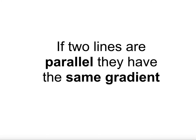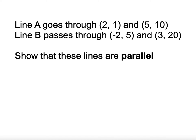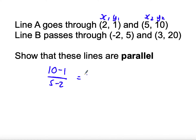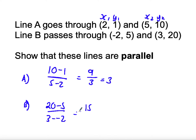Two lines parallel, same gradient — I'm going to say that about 50 times during this video. So I've got line A and line B, two pairs of coordinates, and I need to show they're parallel. Parallel means same gradient, so I'll find the gradient of both lines. For line A: 10 minus 1 over 5 minus 2 is 9 over 3, which is 3. For line B: 20 minus 5 over 3 minus negative 2 is 15 over 5, which is 3. Same gradient, so they are parallel.